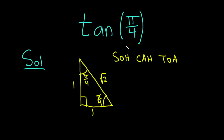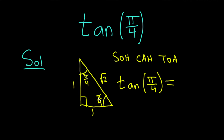In our case, we want tangent, so we have the tangent of pi over 4. Opposite over adjacent — so here's pi over 4, opposite over adjacent. Opposite is going to be 1, so opposite over adjacent is 1 over 1, which is just 1.